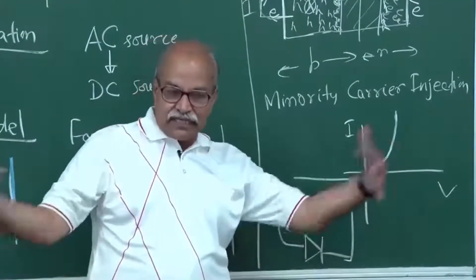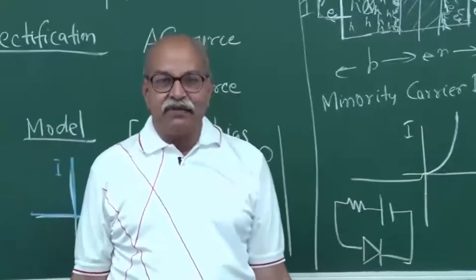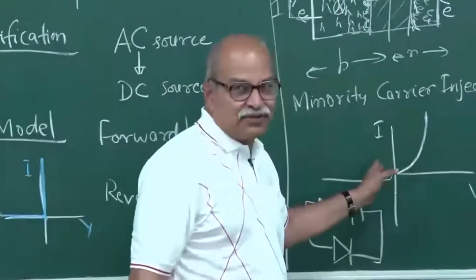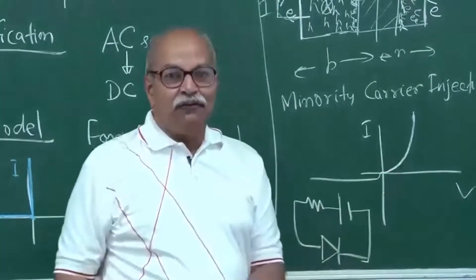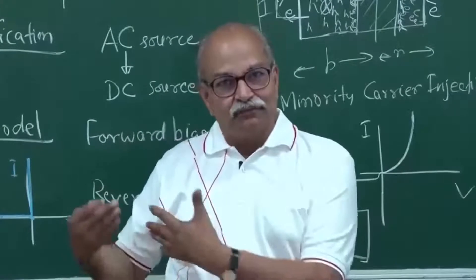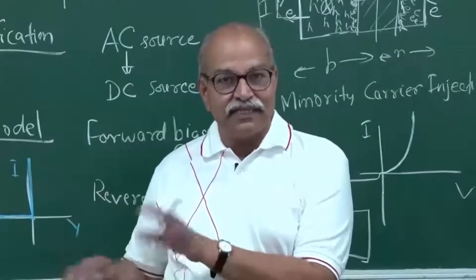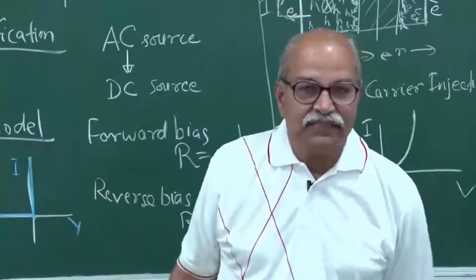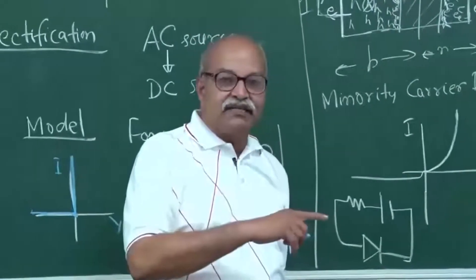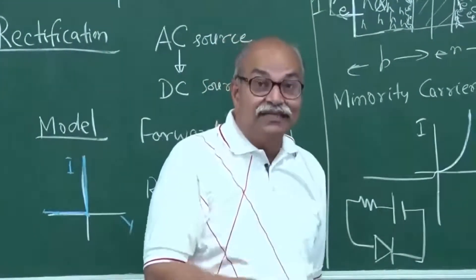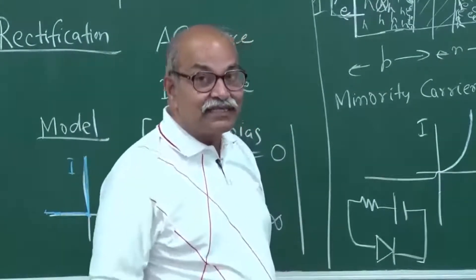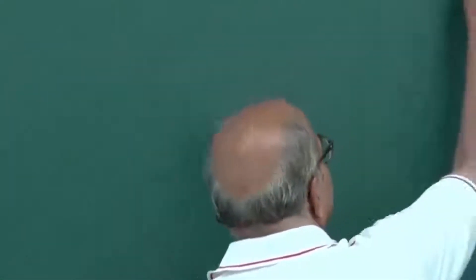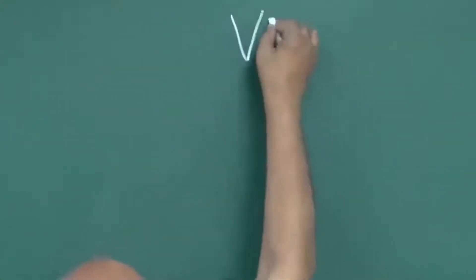So depending on what application you are doing, the appropriate model is to be developed to understand the physics. Let me talk more about how rectification can be done using this diode as the basic unit. Suppose you have an AC source — the voltage is some constant times cos(ωt) — and AC sources are shown by a circular symbol with two ends.